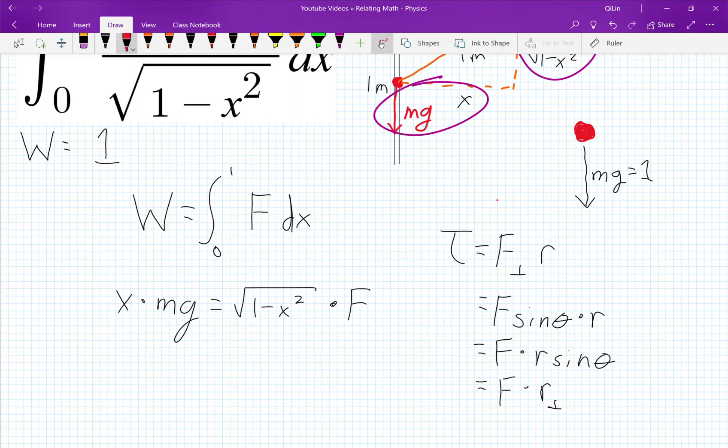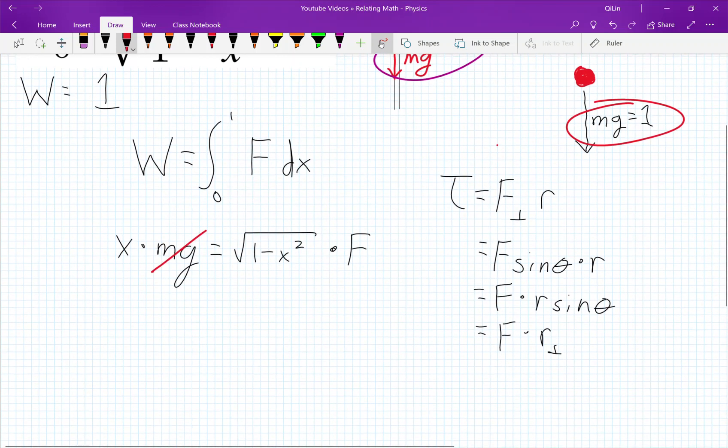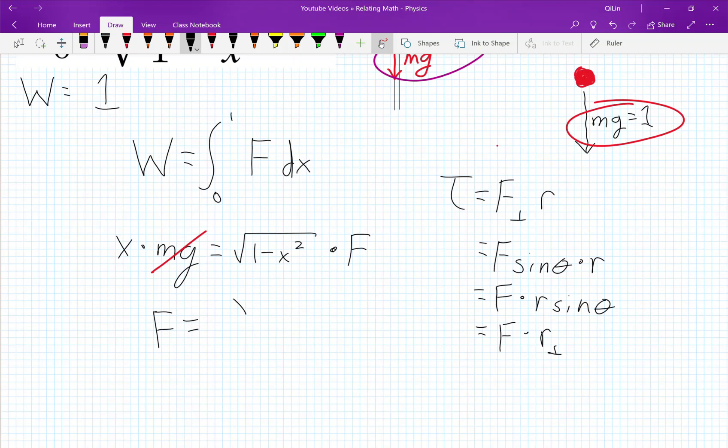And we know that mg is equal to 1 here. So that's just 1. And we can just cancel that out. Now let's divide both sides by the square root of 1 minus x squared. And that will give us the force applied equals x over the square root of 1 minus x squared.